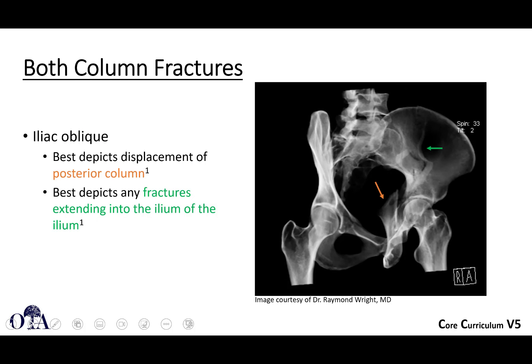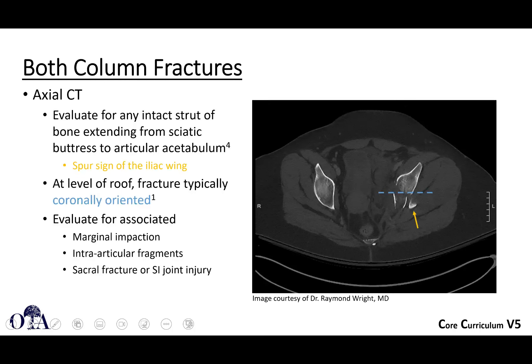On the iliac oblique, you're going to see displacement of the posterior column and fractures going up into the ilium, which are commonly seen with these injury patterns. On axial CT, you may recognize the spur sign, with the tip shown in the gold arrow. At the level of the roof, fractures are typically coronally oriented. You'll look for marginal impaction, intra-articular fragments, and SI joint injuries.